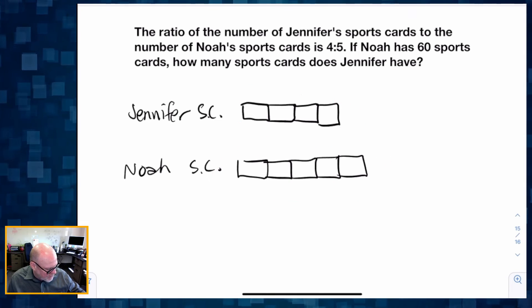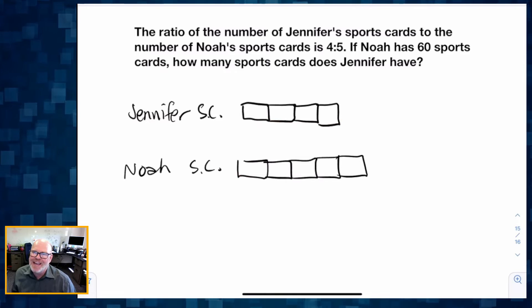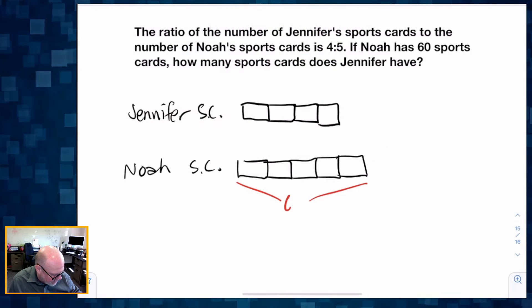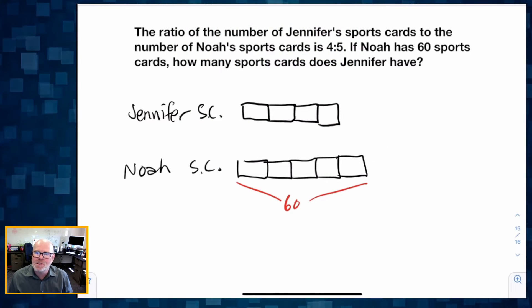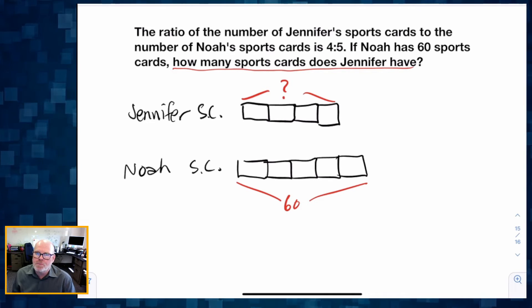Now it says Noah has 60 sports cards, so what that means is these five units down here represent 60 sports cards. It says how many sports cards does Jennifer have? We don't know, so that's the big question mark.